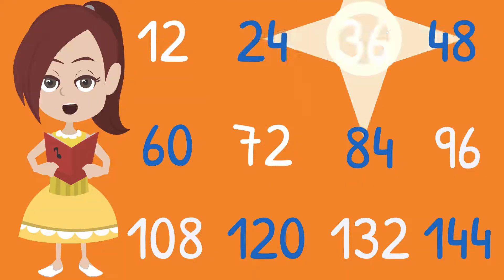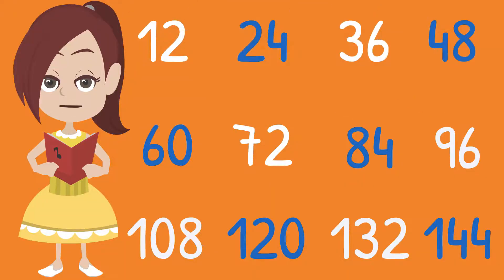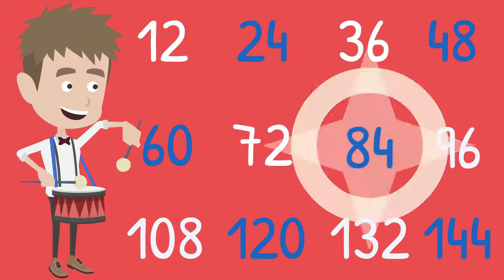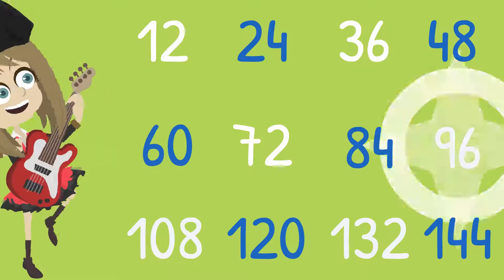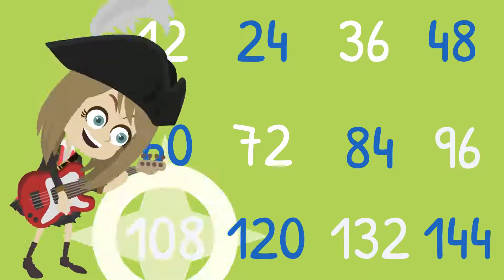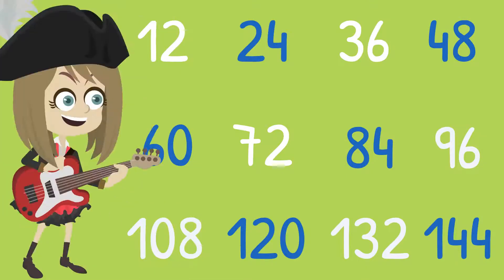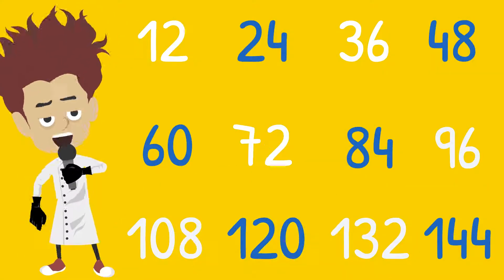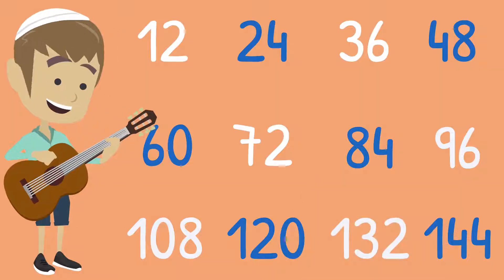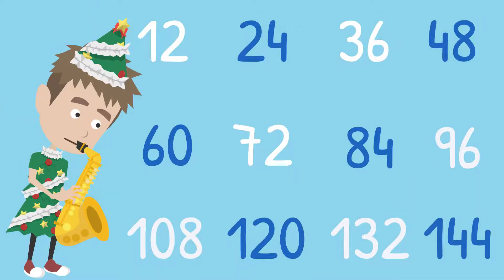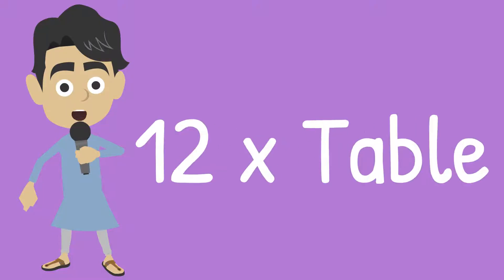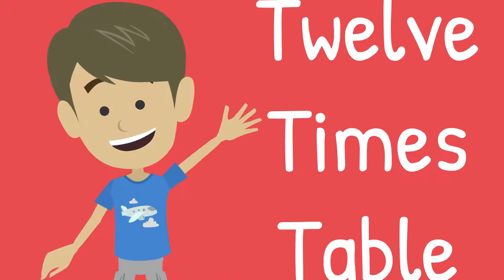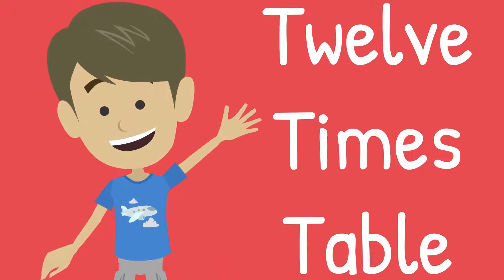12, 24, 36, 48, 60, 72, 84, 96, 108, 120, there's two more, that's 132, and 144. It's a 12 times table.